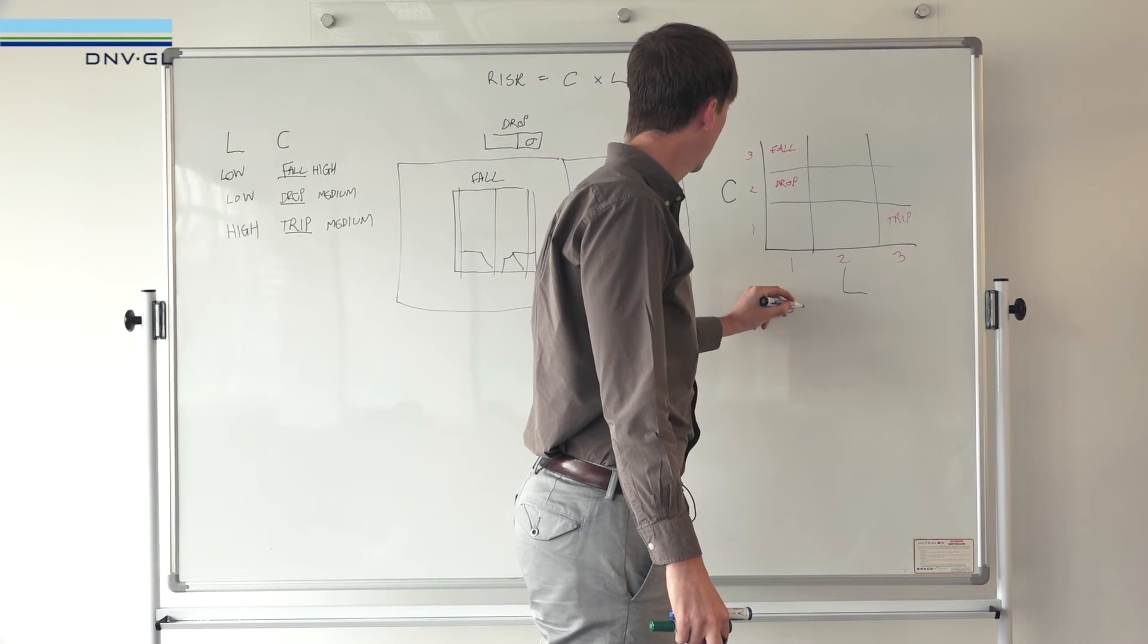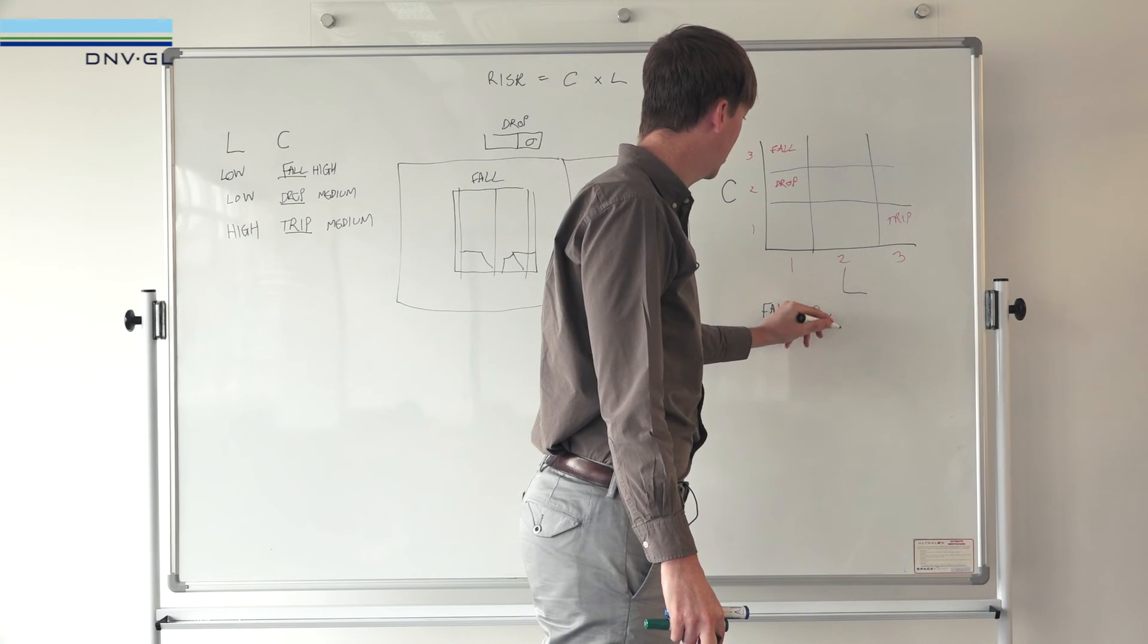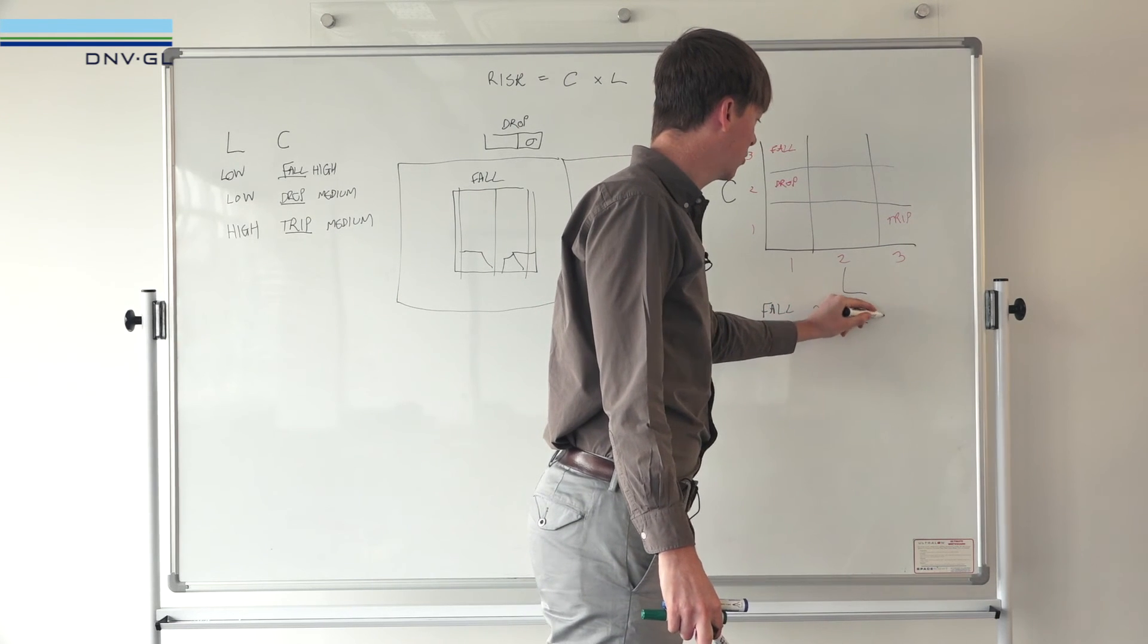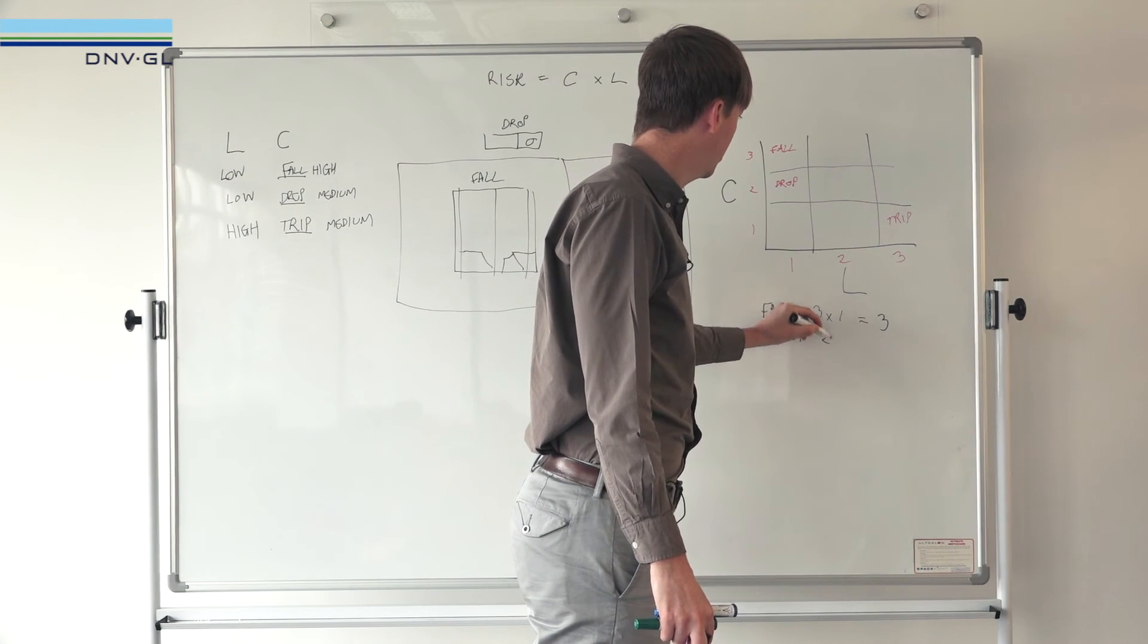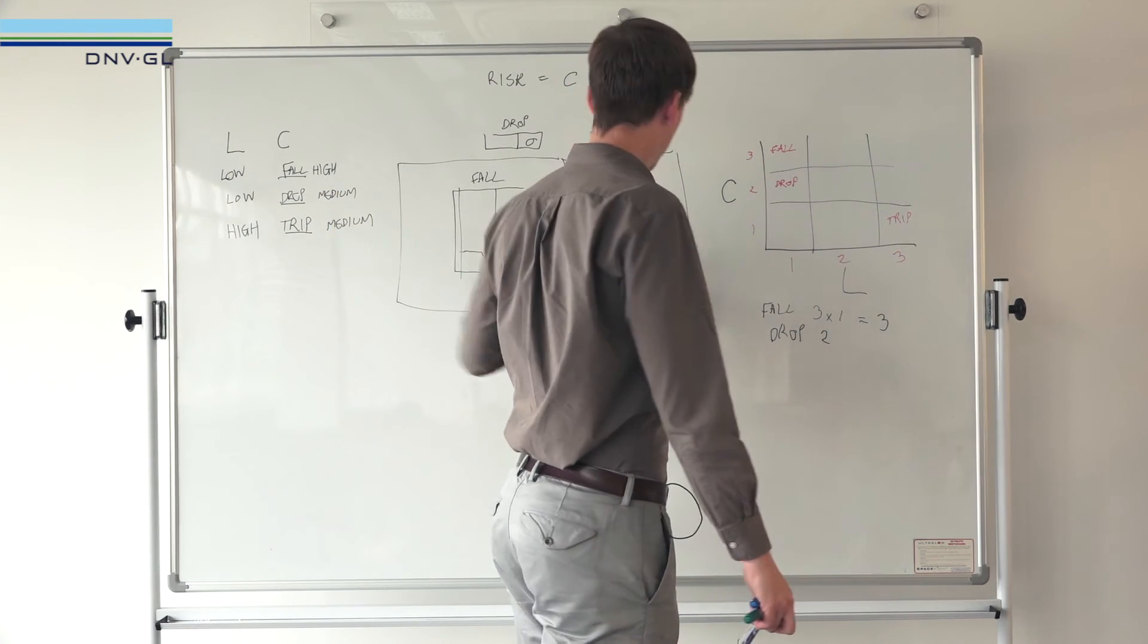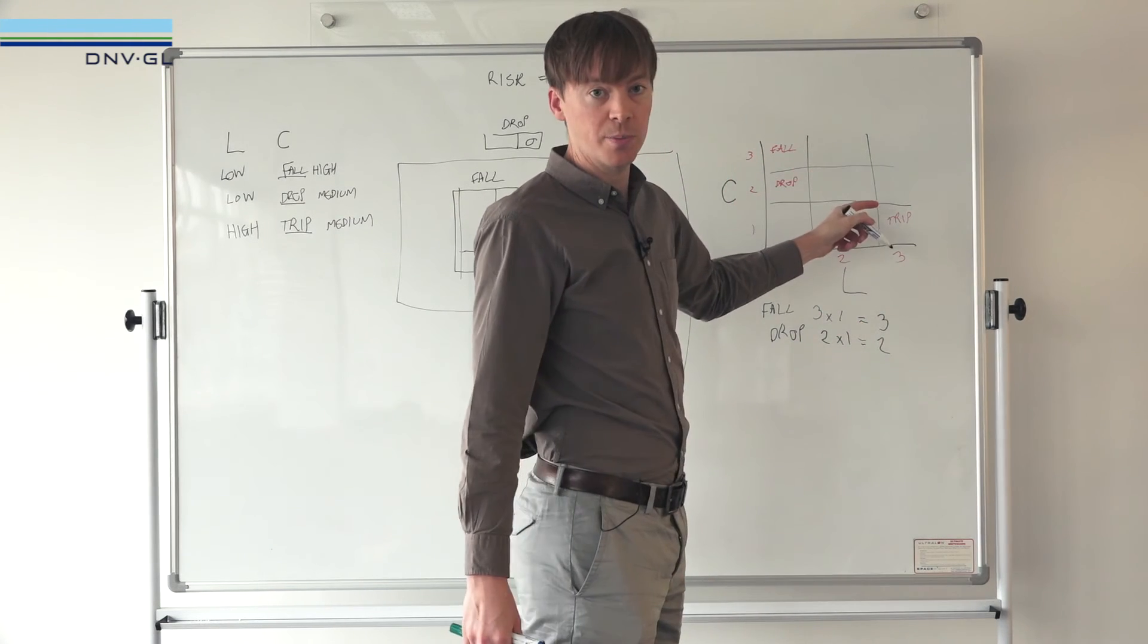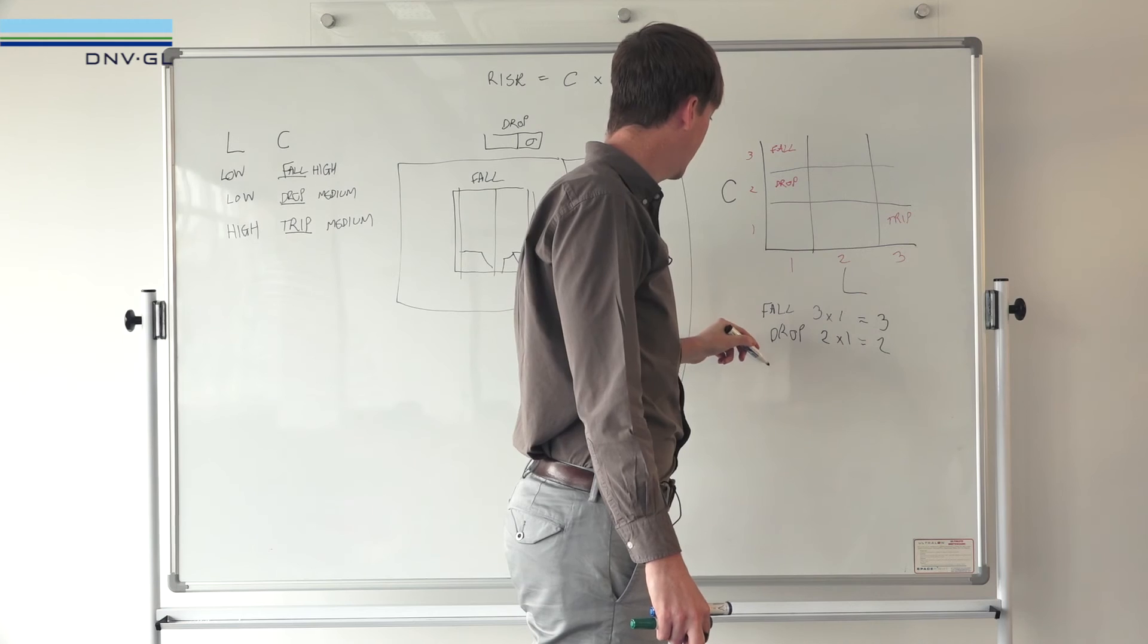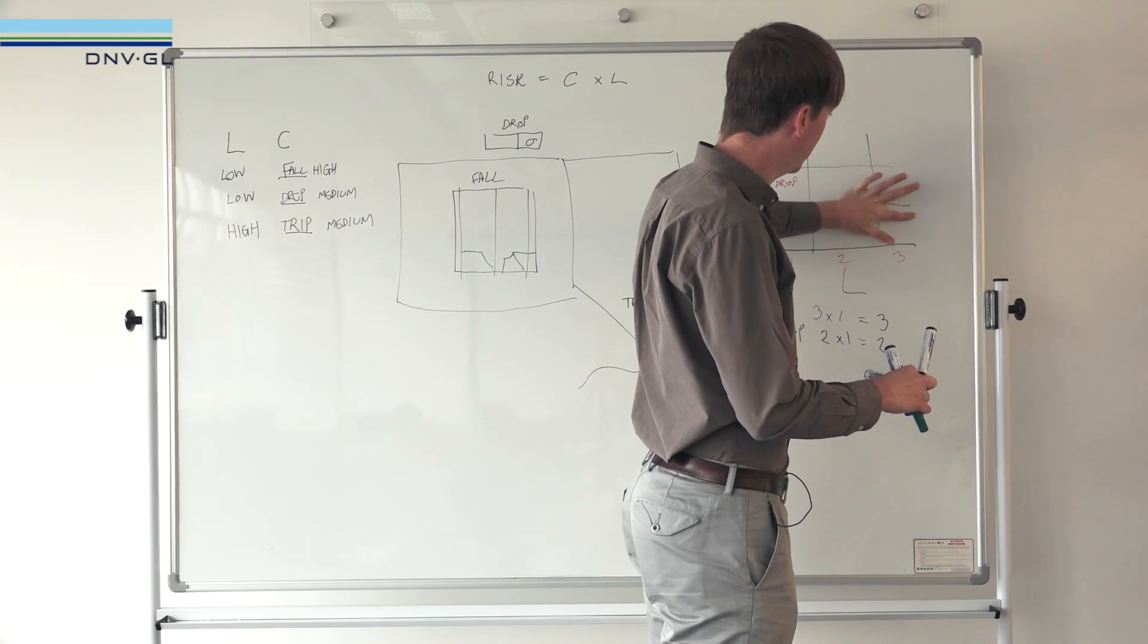Let's start with the same order that we had before. It was fall, and that has a consequence of 3 multiplied by a likelihood of 1, which equals 3.